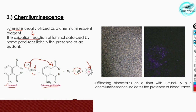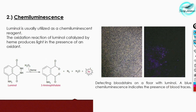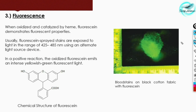As shown in this picture, detecting blood stains on a floor with luminol — a blue chemiluminescence indicates the presence of blood traces. The luminol test is carried out in dark conditions because the emitted light is only visible in a dark environment, not in a lit environment.